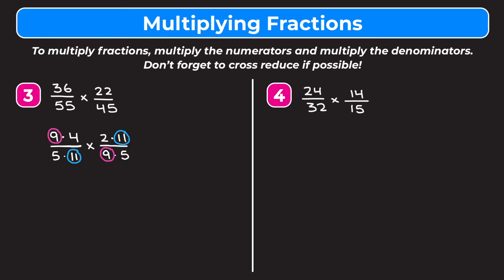Now we can cross out any common factors that appear on the top and bottom of our problem. We cross out the 9 since it appears on top and bottom, and we cross out the 11 for the same reason. Then we just multiply what's left: 4 times 2 on top is 8, and 5 times 5 on the bottom is 25. Because we cross-reduced at the start, there's nothing to simplify at the end, so our answer is 8 twenty-fifths.